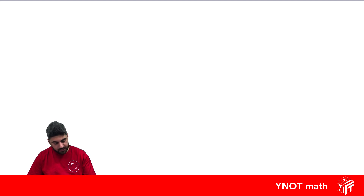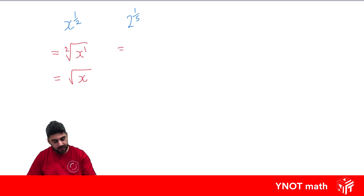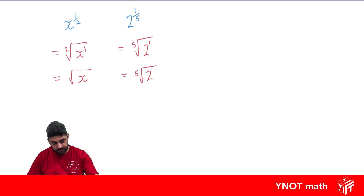For the following examples we want to write in surd form. x to the half: remember, with the fractional power the denominator is the root and the numerator is the power. Since the denominator is 2 we have a square root, and we don't write the 2 for a square root or the power of 1, so it's simply the square root of x. What about 2 to the 1/5? The denominator is the root and the numerator is the power — since the power is 1 we don't write it, so it's the fifth root of 2. And a to the 10/3: the denominator 3 is the root and the numerator 10 is the power, giving the cube root of a to the power of 10.